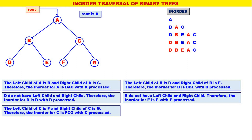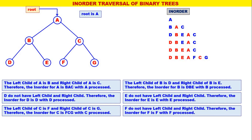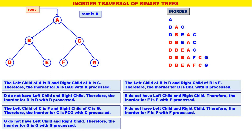Next, C. The left child of C is F and the right child of C is G, therefore the inorder for C is FCG with C processed. Next, F does not have children, so inorder for F is F only. Last one, G — G does not have a left child or right child, therefore the inorder for G is G only with G processed.